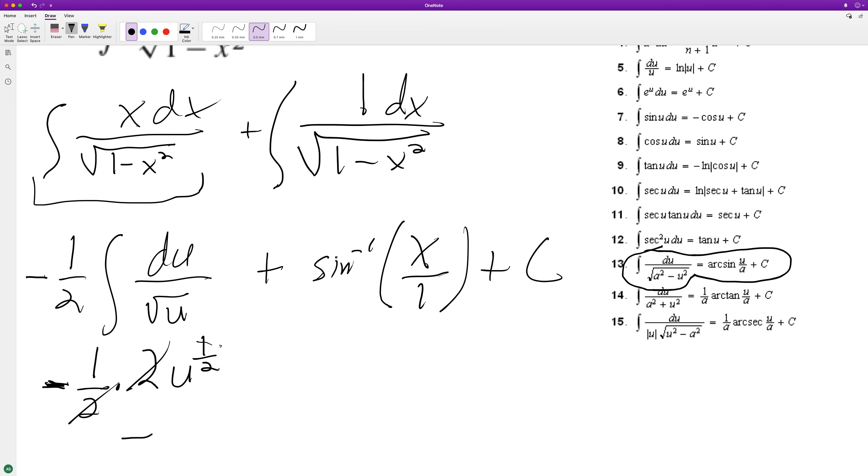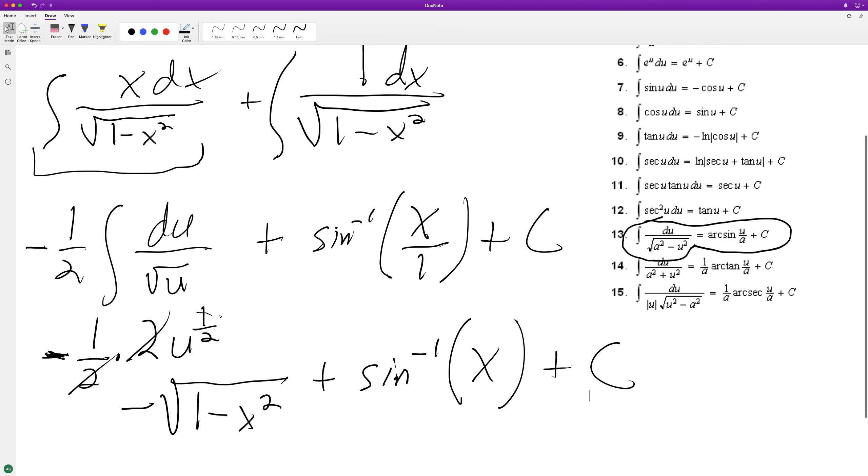So we end up with negative square root - substitute back in for u - 1 minus x squared, plus, again I'm just copying down exactly what I had above because I already did it, plus c. And that's it. And what happens here, if you take the derivative of this and then you combined everything, you could end up with exactly what you had in the original statement.